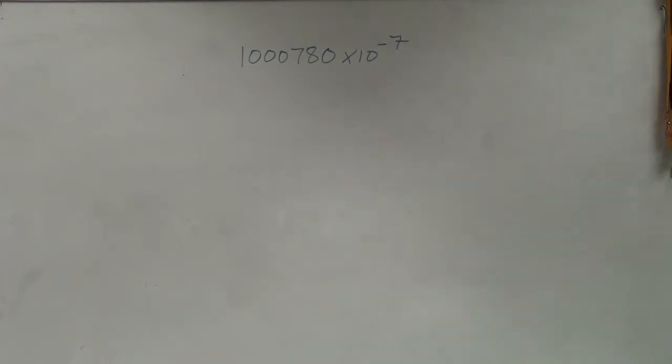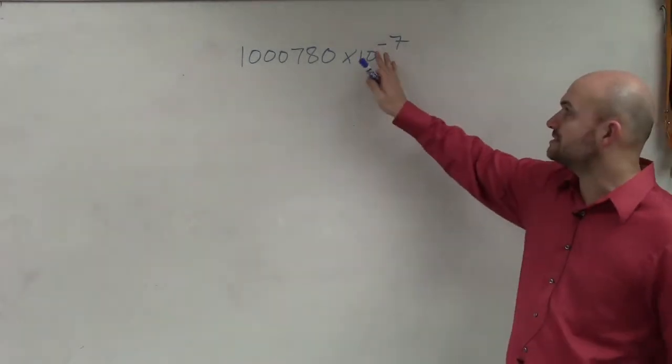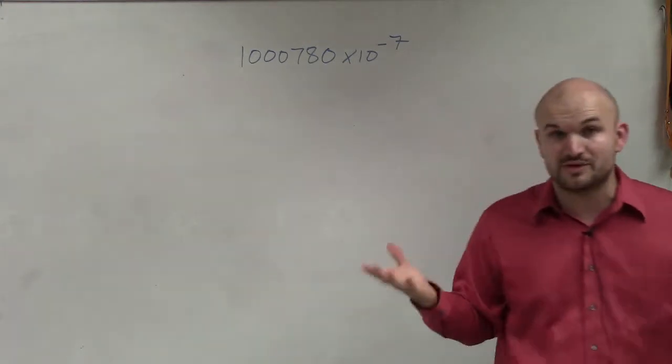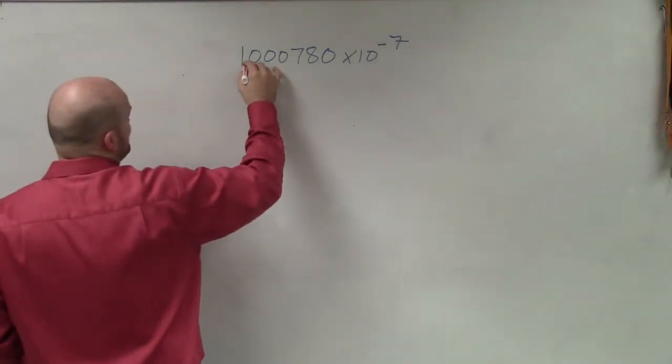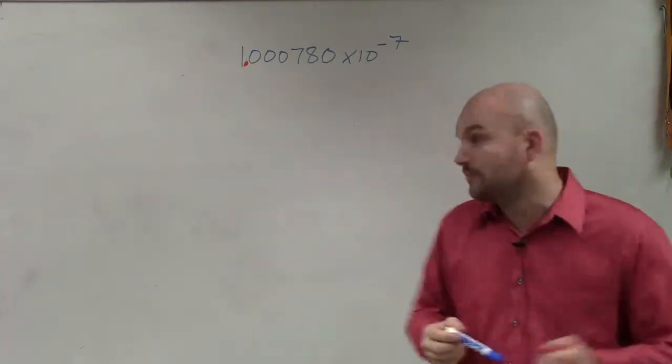Alright, so basically on this one, what we're going to be doing is taking our decimal point. First of all, we need to identify where our decimal point is going to go. Since our a has to be between 1 and 10, we're going to put the decimal point right after the 1.